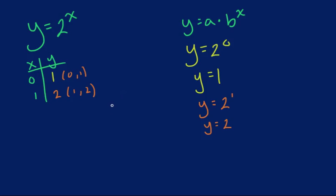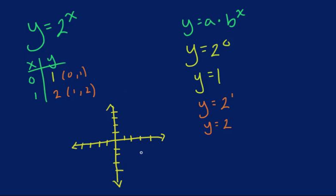Let's go ahead and draw a graph here with our x and y coordinates. I always suggest using a ruler — it definitely helps. Now we'll plot the point (0, 1) right here, and then the next point is (1, 2) right here. We can tell this is an exponential growth function.